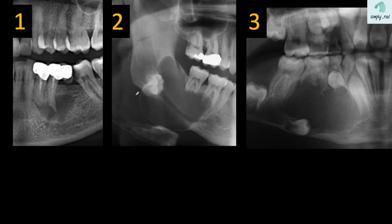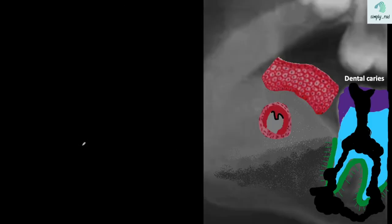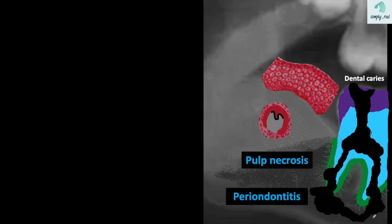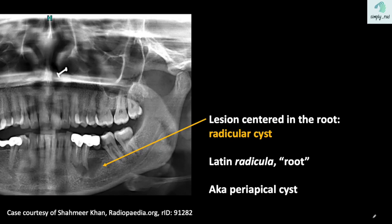Now let's review the three jaw radiographs we saw at the beginning. The first case is a lucency in the root. This starts as an infection in the tooth from caries. When the infection reaches the deeper structures, there will be pulp necrosis. This results in spread of infection around the root of the tooth. Due to its location, this is also known as the periapical cyst. Radicula means root in Latin, hence this lesion is called the radicular cyst.